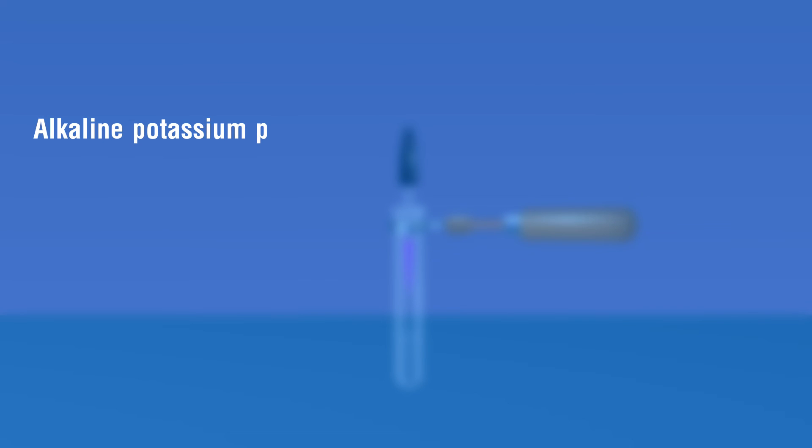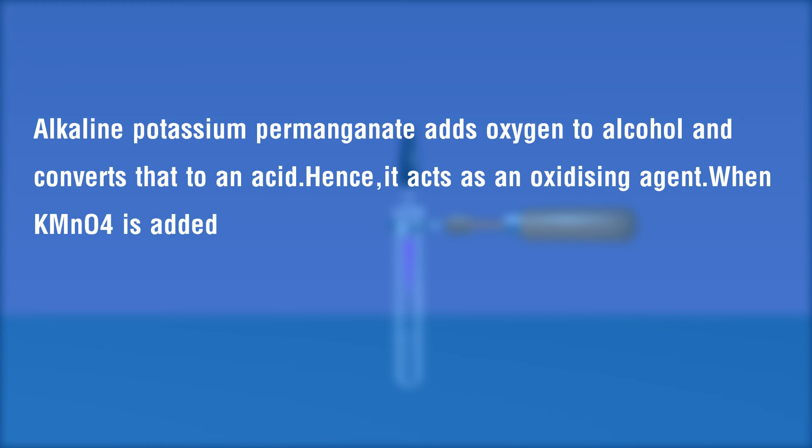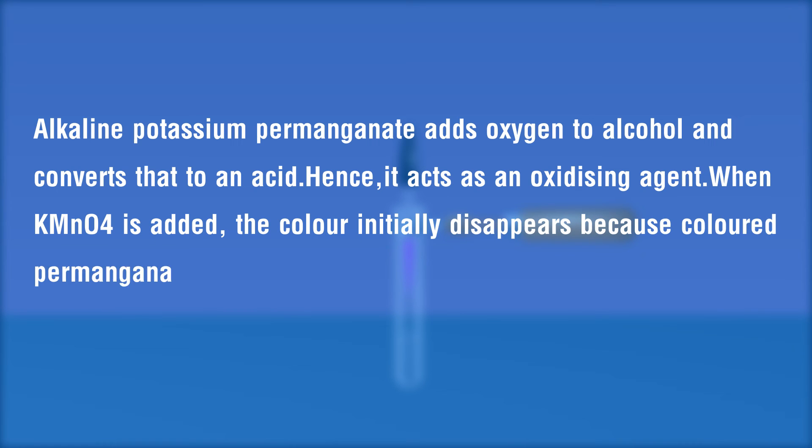Alkaline potassium permanganate adds oxygen to alcohol and converts that to an acid, hence it acts as an oxidizing agent. When KMnO4 is added, the color initially disappears because colored permanganate ions of potassium permanganate are consumed to oxidize ethanol.